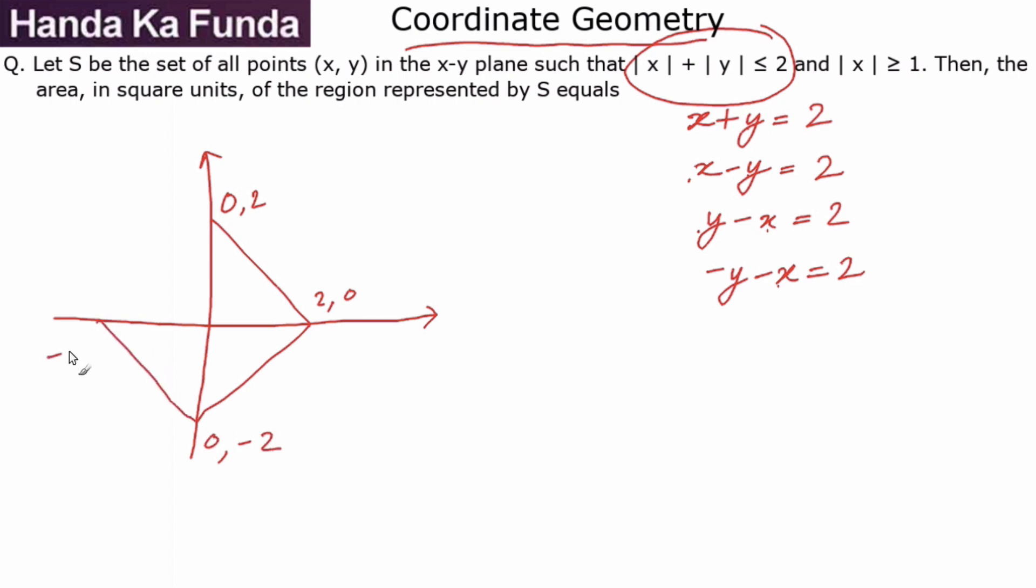This one would be another one of those lines which goes to (-2, 0), and this one will be the other fourth line. These will be the four lines that would be formed with |x| + |y| ≤ 2. The portion inside it will be the area that we are concerned about—S will be the set of all these points.